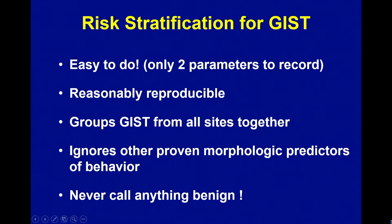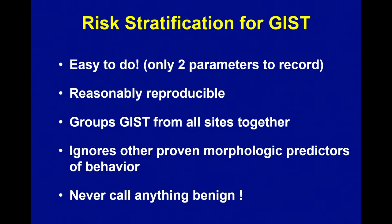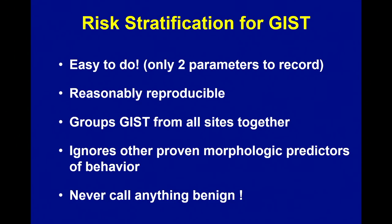There are some issues with this risk stratification. It's easy to do — two parameters to record, reasonably reproducible, although I would argue that counting mitotic figures is not necessarily a reproducible feature. The biggest problem was that it grouped GI stromal tumors from all sites together. There's nothing about stomach versus small bowel versus colon or rectum. We know that GI stromal tumors from different parts of the GI tract are really totally different tumors — they look different and they act different. To group them all together and use two parameters is way overly simplistic.